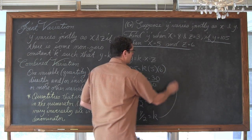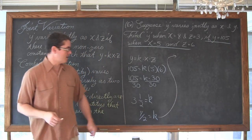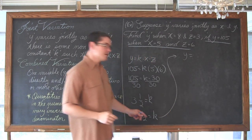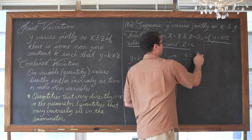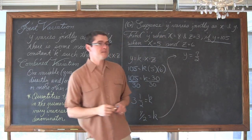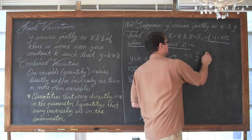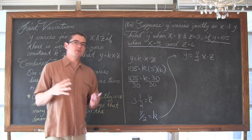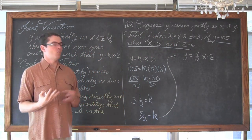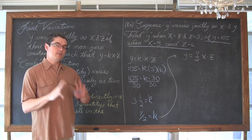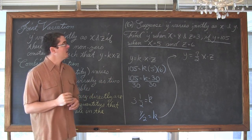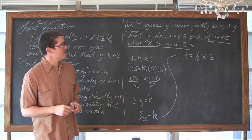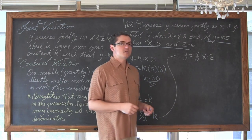Now we are going to write the actual equation out. We have y equals seven over two times x times z. Let's go to the other part of the problem where they ask us to find one of these three variables. We have the constant now, we have the equation. The actual problem says find y when x is equal to 8 and z is equal to 3.